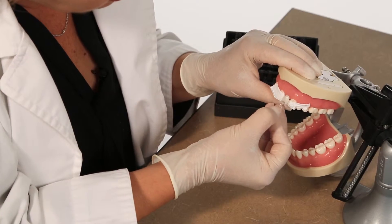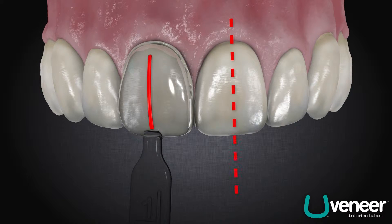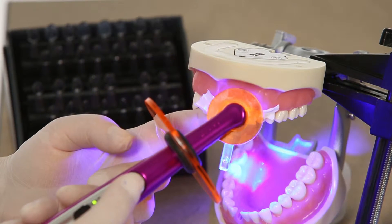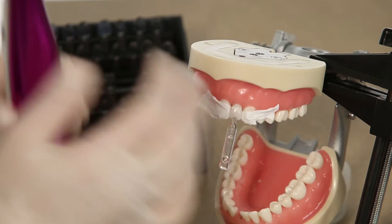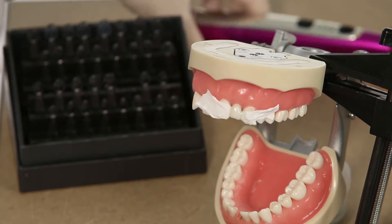Then, making sure the center line on the template is parallel with the center line on the face, light cure for 40 seconds. The template should easily be removed from the cured composite.